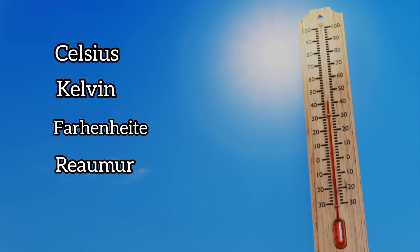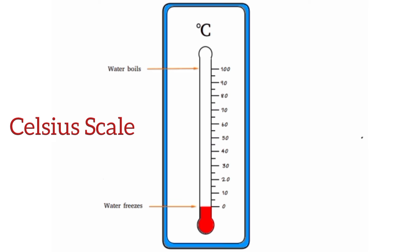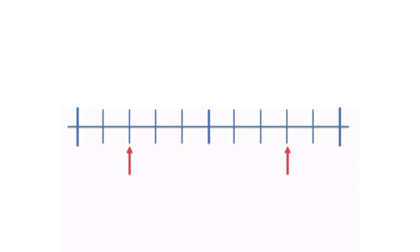Celsius, Kelvin, Fahrenheit, and Réaumur all are different scales to measure temperature. Let's start with Celsius. The Celsius scale, also known as Centigrade scale. On this scale, two points are marked: freezing point of water and the boiling point of water.